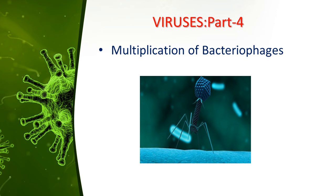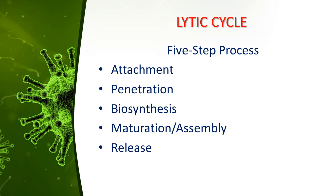Viruses part 4: application of bacterial phages. For any virus to multiply, replicate, or reproduce, it must invade a host cell and take over the host metabolic machinery. Phages can be multiplied by two alternative mechanisms: the lytic cycle and the lysogenic cycle. The lytic cycle ends with lysis or death of the host cell, whereas the host cell remains alive in the lysogenic cycle. Five steps are involved in the lytic cycle: attachment, penetration, biosynthesis, maturation or assembly, and release.